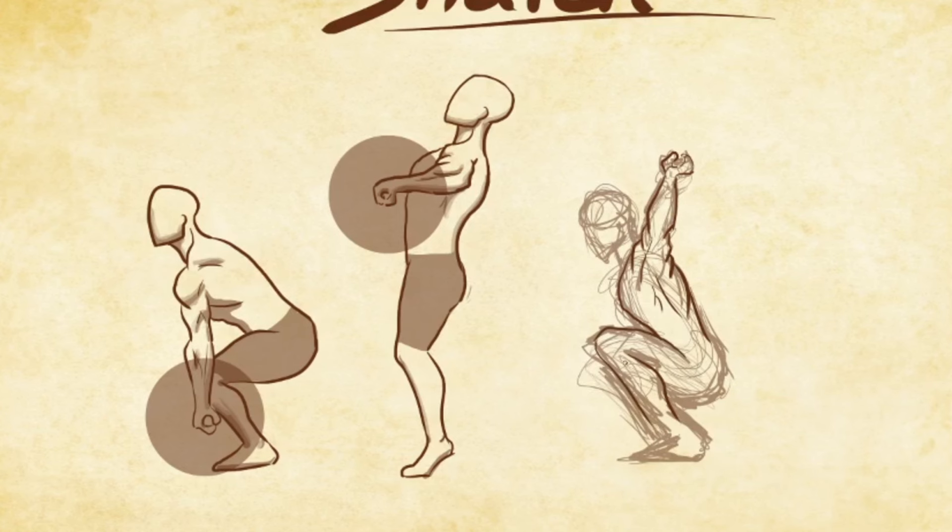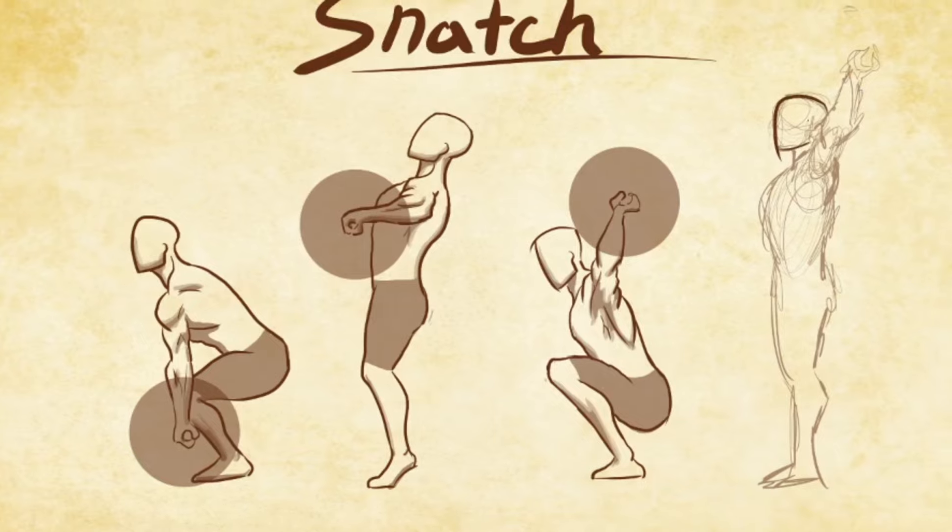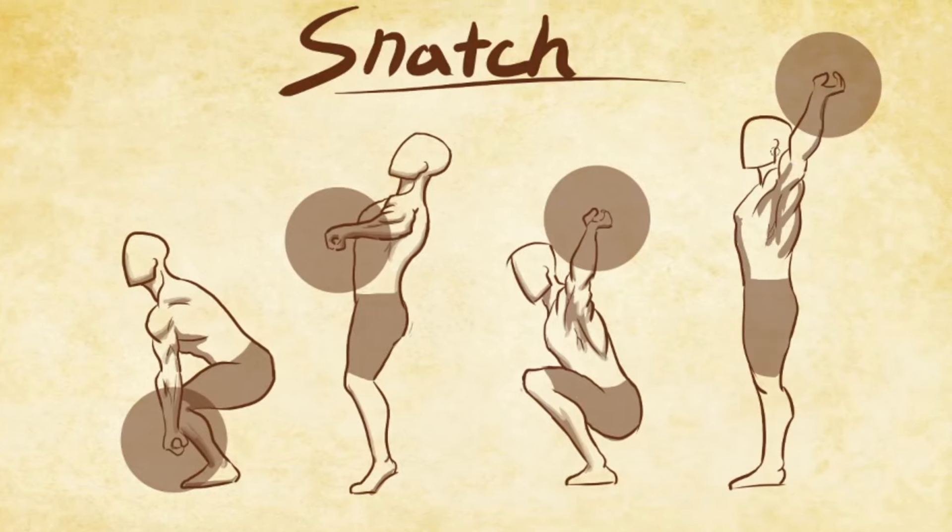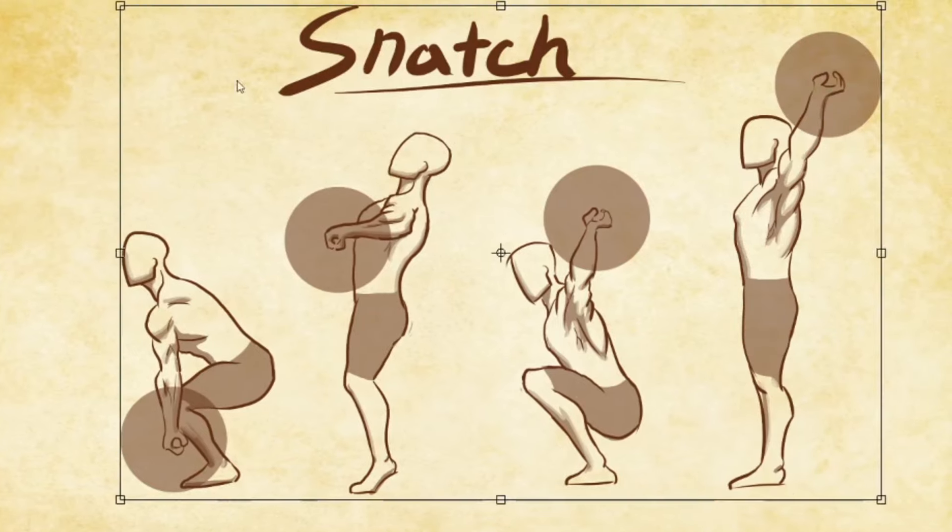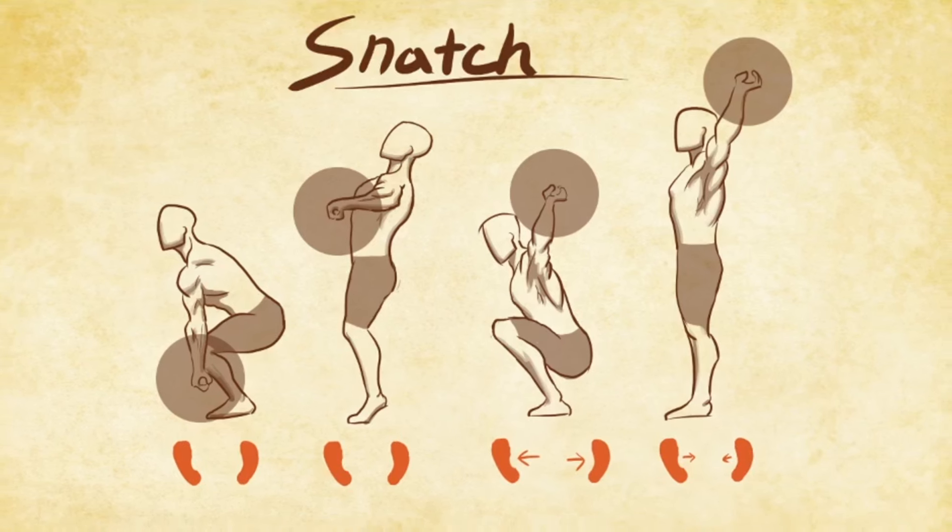To accomplish this, the lifter must triple extend powerfully, then drop down quickly into a deep squat underneath the bar with arms fully extended in that wide grip. The feet are often widened to some degree just before receiving the weight and after catching the weight overhead, the lifter will extend their knees and hips in order to stand upright with bar fully extended overhead and arms locked out, thus completing the lift.